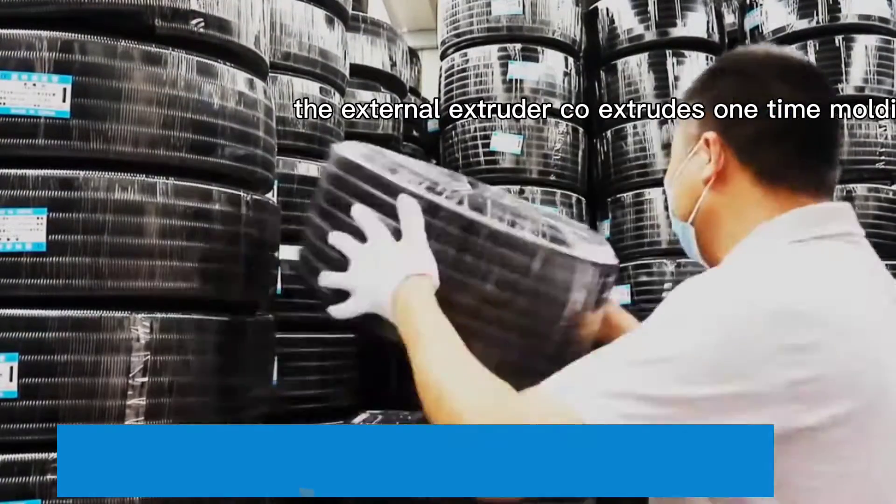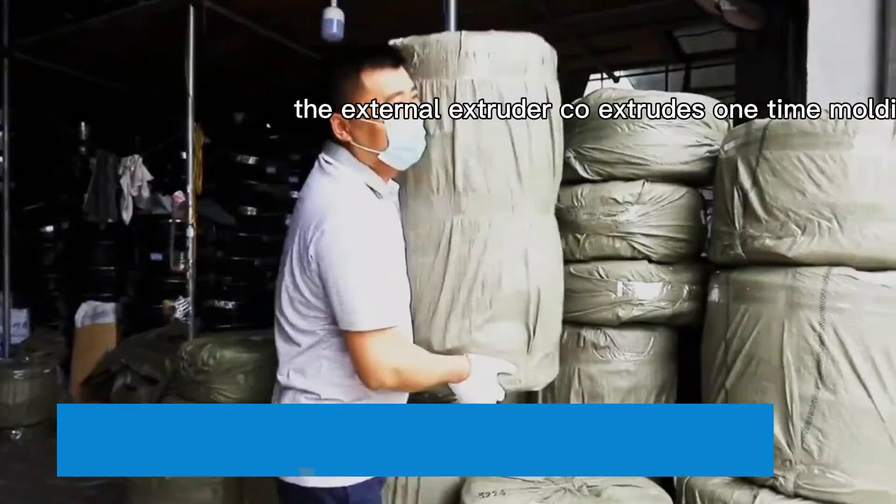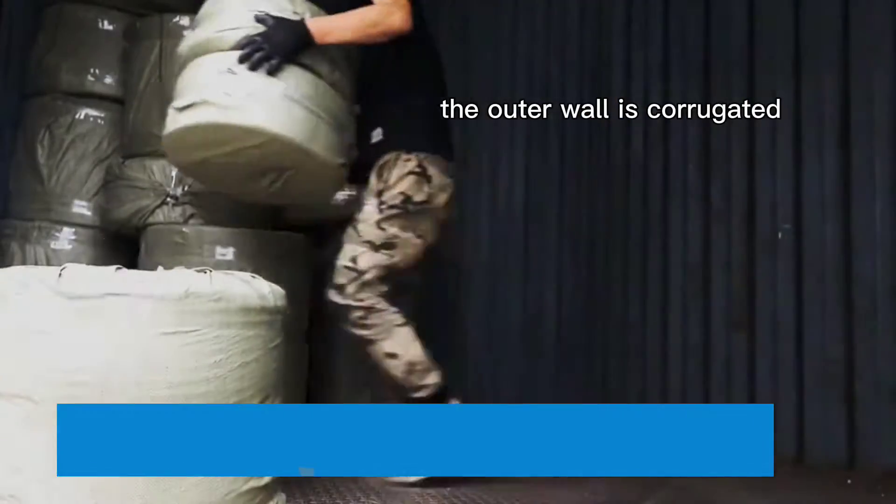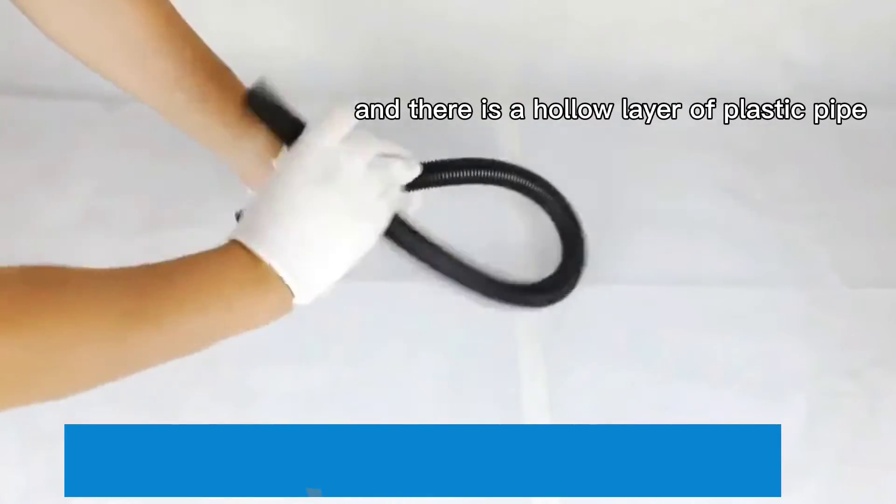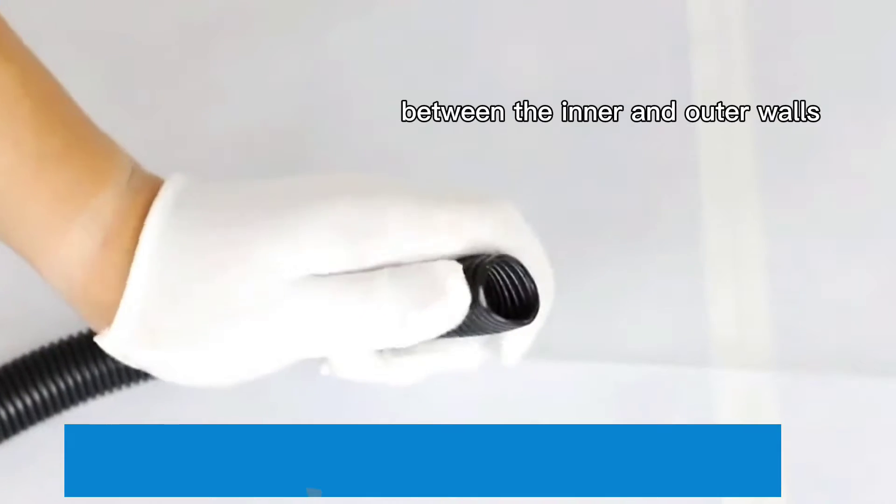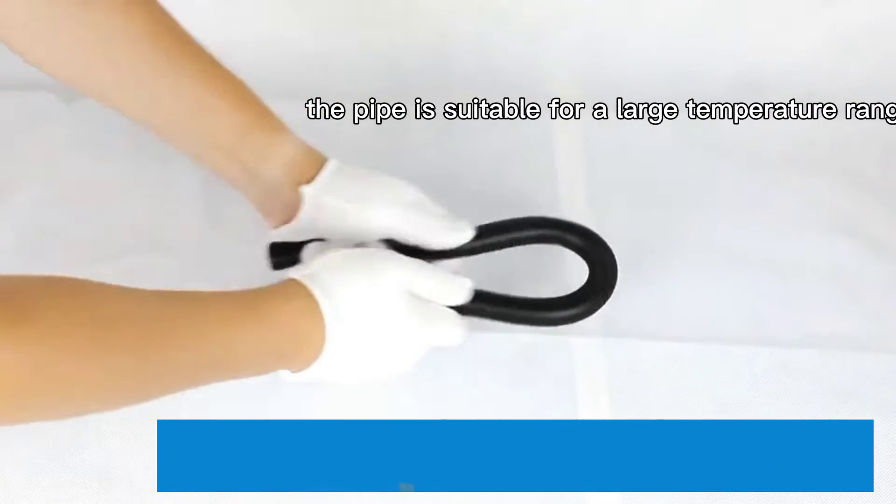The external extruder co-extrudes in one-time molding. The inner wall is smooth, the outer wall is corrugated, and there is a hollow layer of plastic pipe between the inner and outer walls.